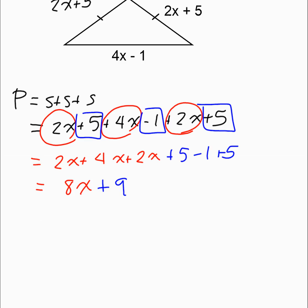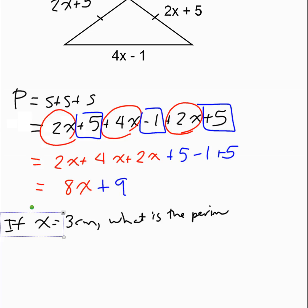If the question then said, for example, x equals 3 centimeters, what is the perimeter? You would substitute in: 8 times 3 plus 9, and calculate the perimeter. The value will change based on what x is, so if they tell you x, you substitute in to get the actual perimeter.